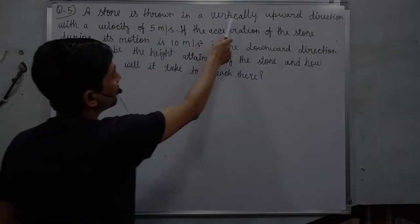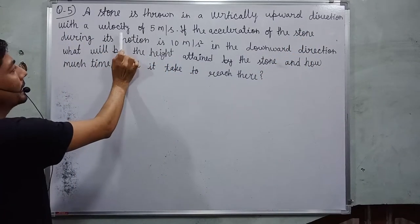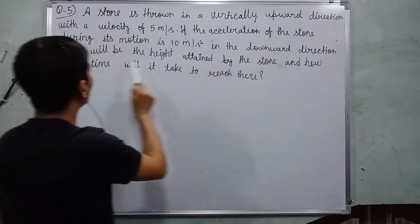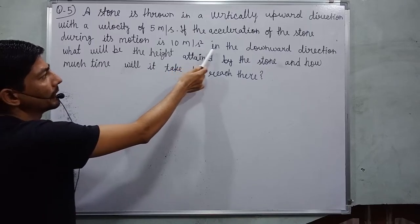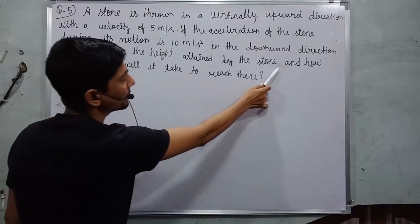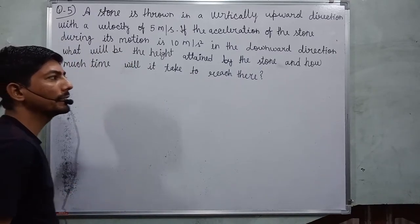A stone is thrown in a vertically upward direction with a velocity of 5 meter per second. If the acceleration of the stone during its motion is 10 meter per second square in the downward direction, what will be the height attained by the stone and how much time will it take to reach there?